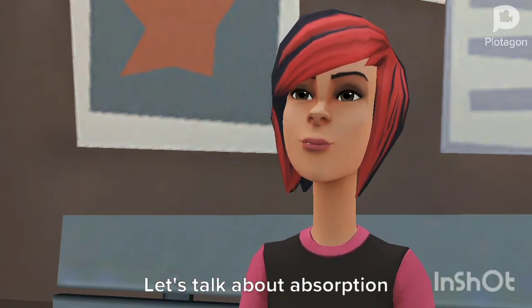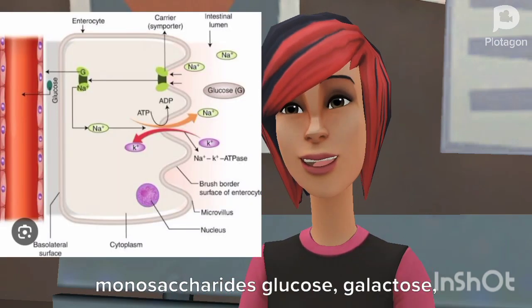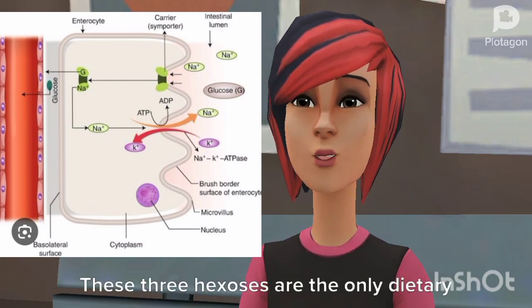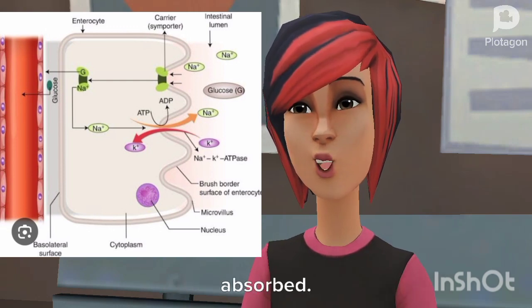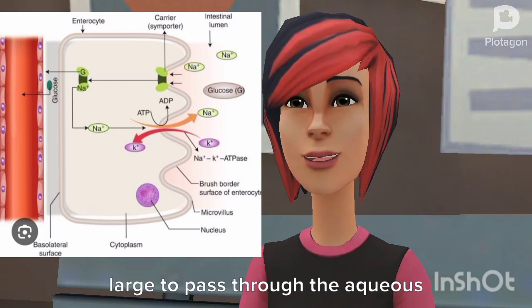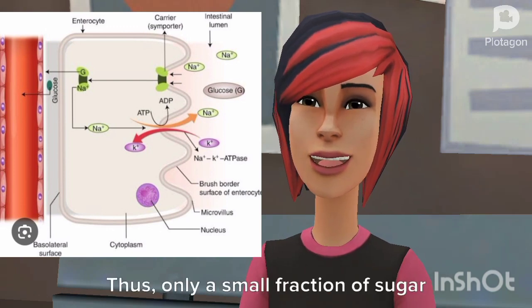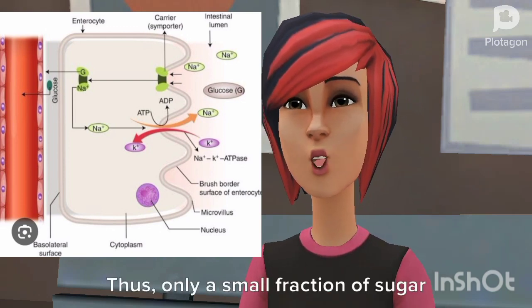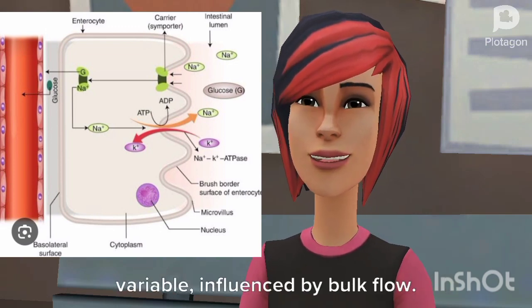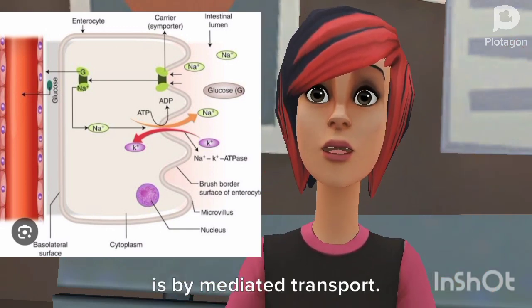Let's talk about absorption of carbohydrates. Carbohydrate digestion produces the monosaccharides glucose, galactose, and fructose. These three hexoses are the only dietary sugars of any consequence that are absorbed. In general, these substrates are too large to pass through the aqueous channels between the enterocytes or through the pores in the apical cell membranes. Thus, only a small fraction of sugar absorption takes place by passive diffusion; the amount passively absorbed is somewhat variable, influenced by bulk flow. The large majority of hexose uptake is by mediated transport.